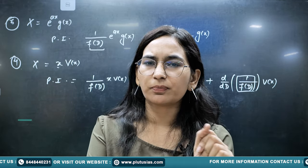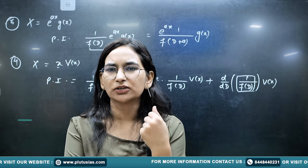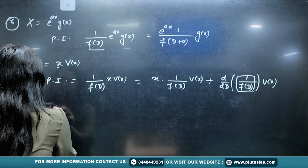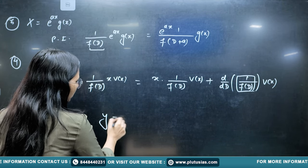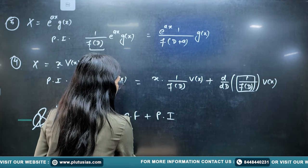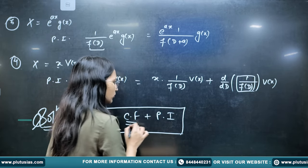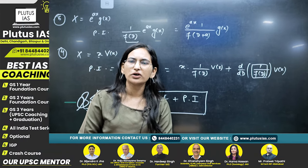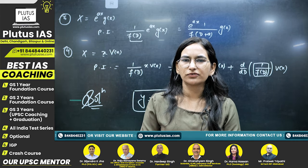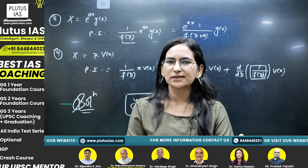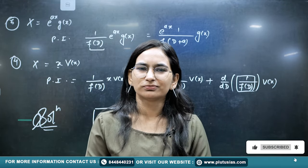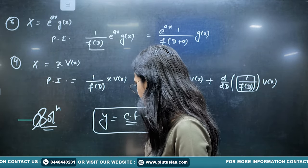You have found the complementary factor, you have found the particular integral. Then the final solution is: y equals complementary factor plus PI. Add both together. The complementary factor gives you the solution for the left-hand side, and the PI gives you the solution for the right-hand side. This was the revision series for higher order differential equations with constant coefficients. In the next video, we will deal with variable coefficients. Stay tuned for more videos of the revision series. All the best, thank you.